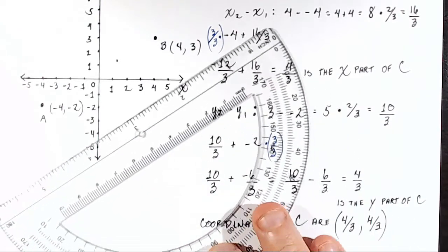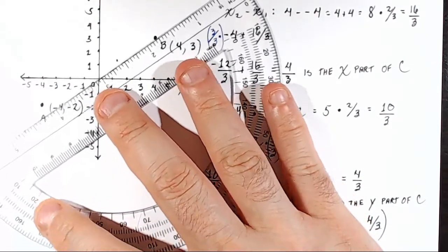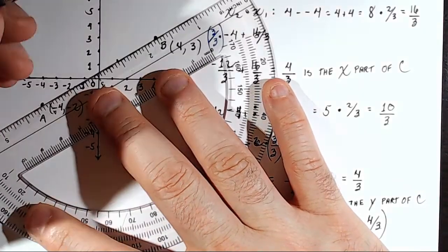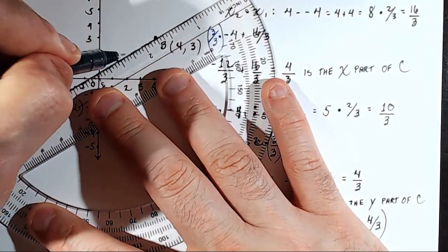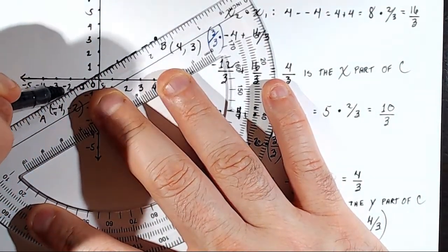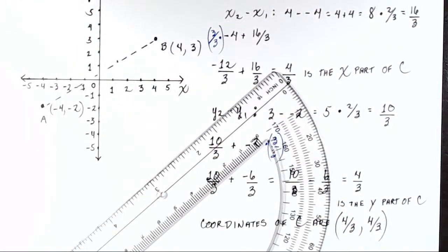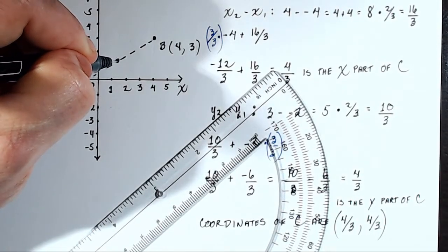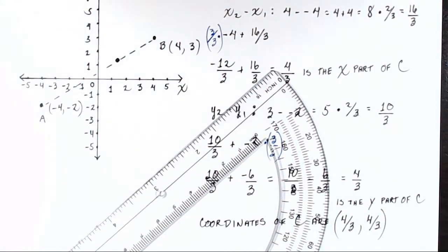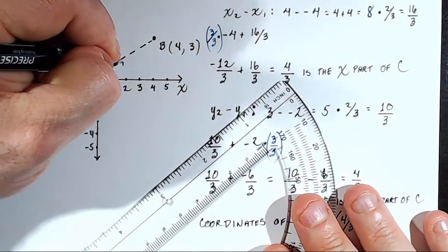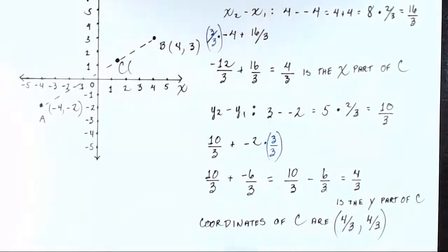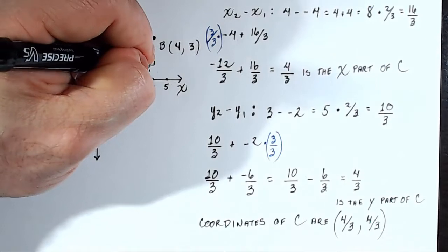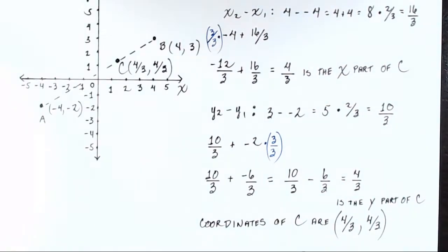But here's something we can do to make sure that we're right. We can take our protractor or our ruler and we can dot in the imaginary line between these two points. And our point that we found should lie right on that line. And it absolutely does. So there is that point. This is point C, which is at 4 thirds, comma 4 thirds.